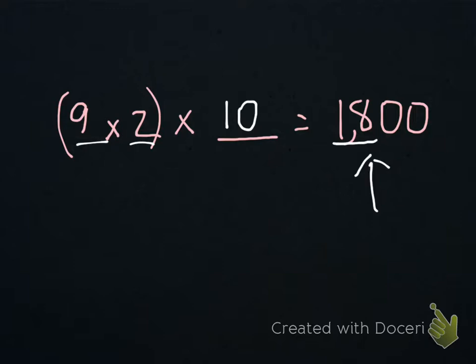And all we would need to do is, since we know that the exponent is what tells us how many zeros will be added to our answer, since there are two zeros in this product, we know that that power of 10 would have to be the second power of 10. The exponent would have to be 2, since there were two zeros added to that product. So therefore, 9 times 2 times the second power of 10 would give us 1800.